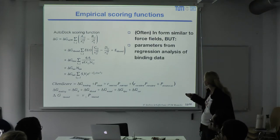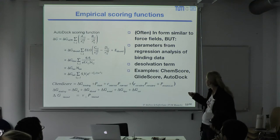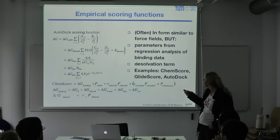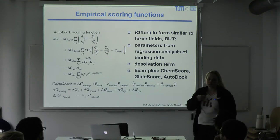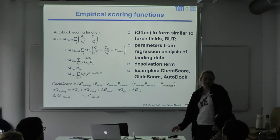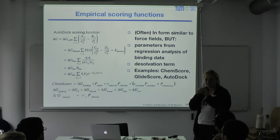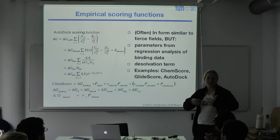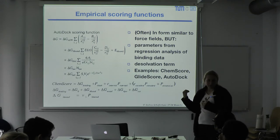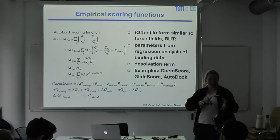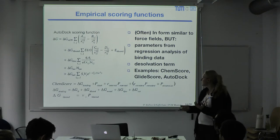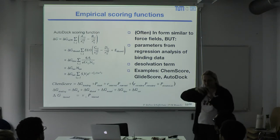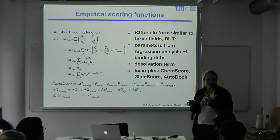Empirical scoring functions try to account for entropy effects — such as the benefit of burying hydrophobic surface area — that physics-based functions struggle to capture. By parameterizing against experimental binding constants, empirical functions can include terms like buried hydrophobic surface area that implicitly capture entropic contributions.